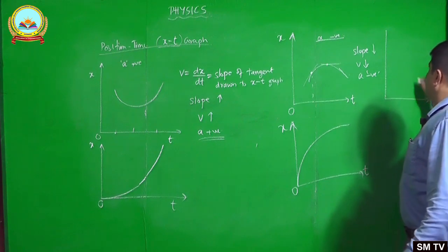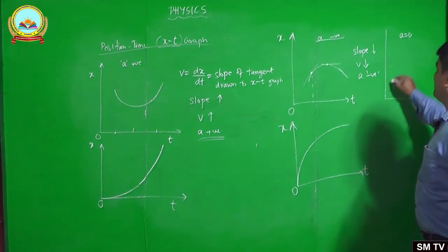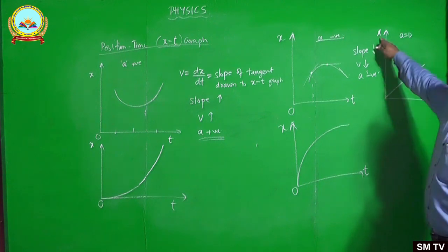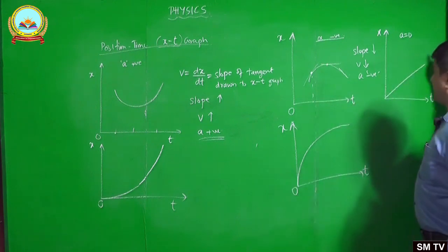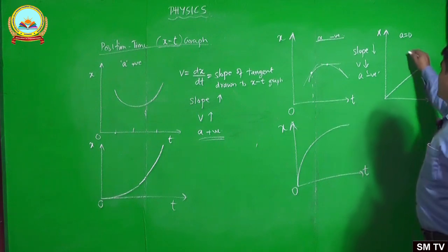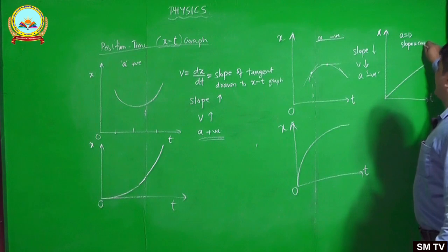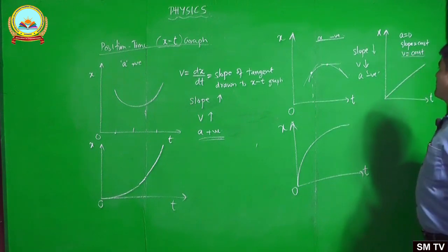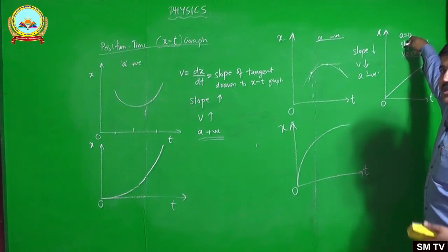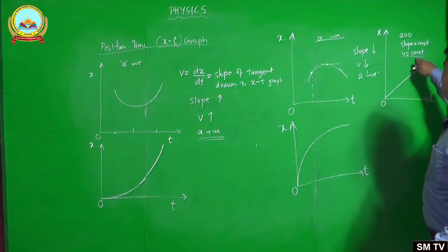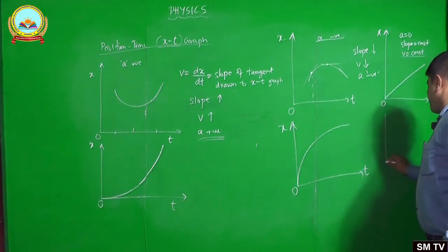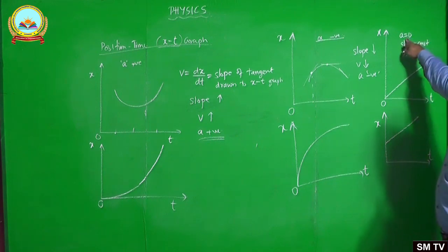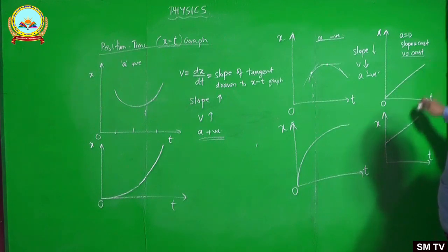If acceleration is zero, what can the graph be? The position-time graph is a straight line. The slope of the position-time graph gives you velocity. For a straight line, slope is constant, so velocity equals constant. When velocity is constant, acceleration is zero — no increase or decrease in velocity means acceleration is considered zero.